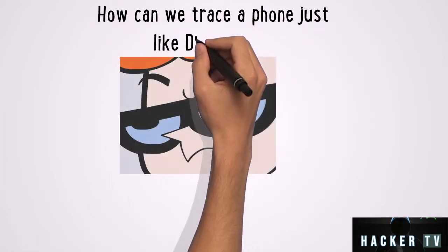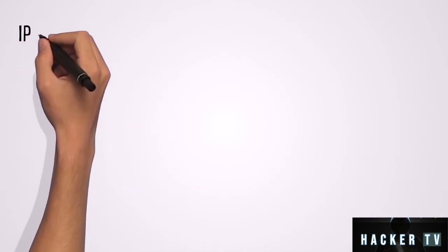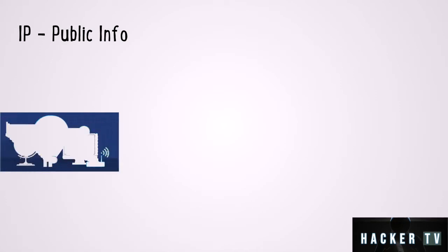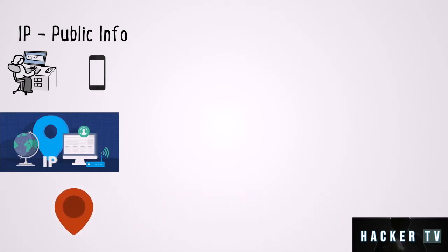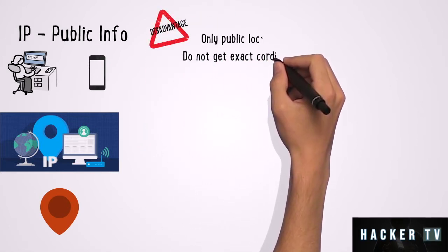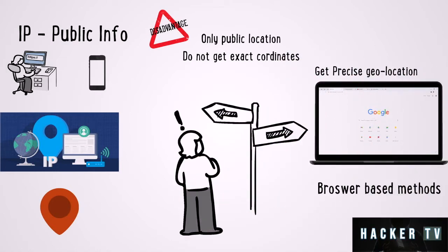So how can we trace a phone just like Dexter? The answer is internet-based location. Every device connected on a network has an IP address — everything on the internet is connected with a public IP address. If you are watching this video on a phone, your public IP will be mostly your ISP's public internet gateway IP. Every public IP is associated with a geolocation, mostly where that server or gateway is hosted. But this location tracing method doesn't give us exact location coordinates.